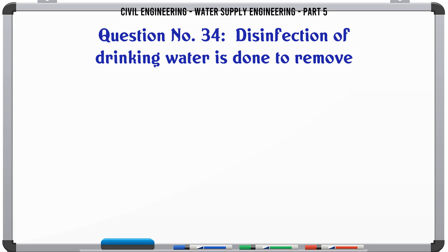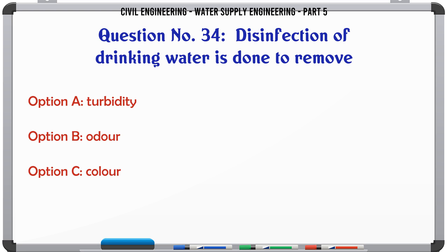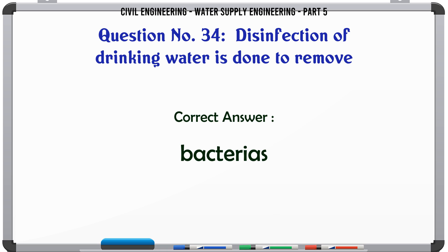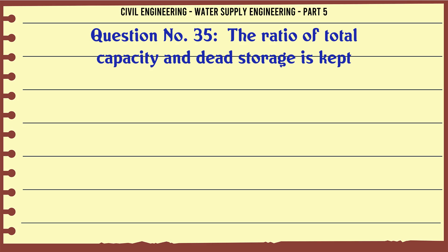Disinfection of drinking water is done to remove: A. Turbidity, B. Odor, C. Color, D. Bacteria. The correct answer is Bacteria.